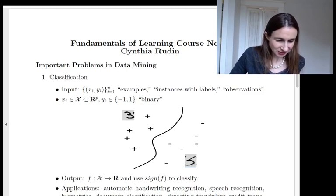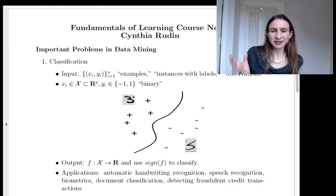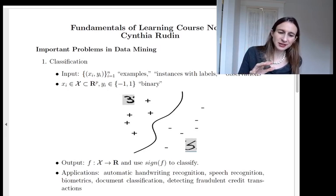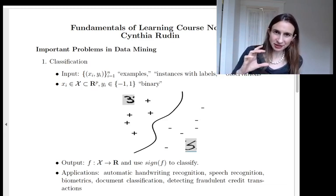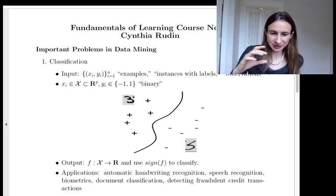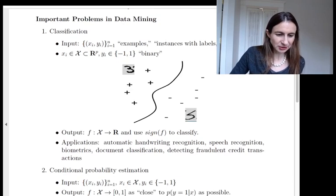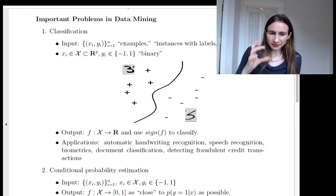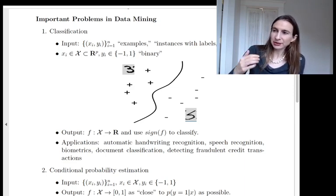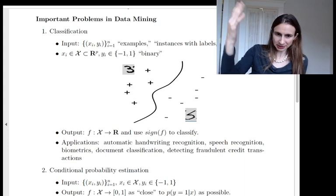And so, for instance, I have an example here where we are just classifying handwritten threes from handwritten fives, where each handwritten digit is expressed as an image, and the image is expressed as a vector. And then your goal would be to construct a function f that would take in a new image and then spit out a real value label, which is your confidence that this is a handwritten three.